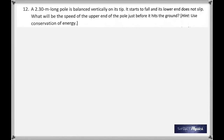Question 12: a 2.3-meter long pole is balanced vertically on its tip. It starts to fall and its lower end does not slip. What will be the speed of the upper end just before it hits the ground? Hint: use conservation of energy. The potential energy while vertical converts into kinetic energy as it falls. For potential energy take MGH — the mass will cancel on either side.